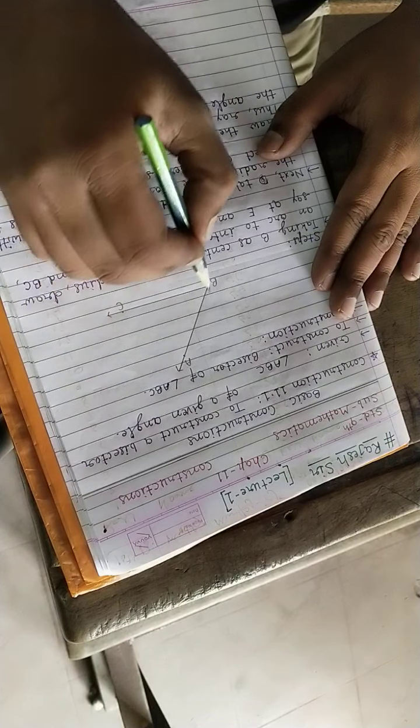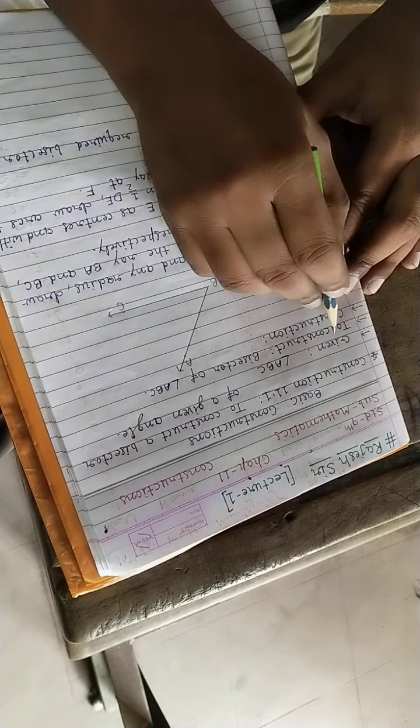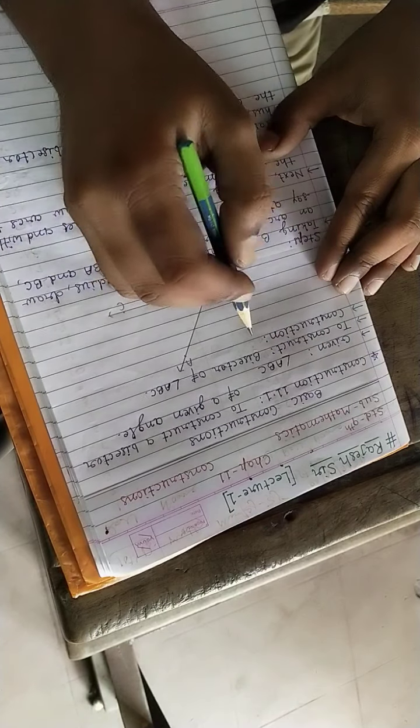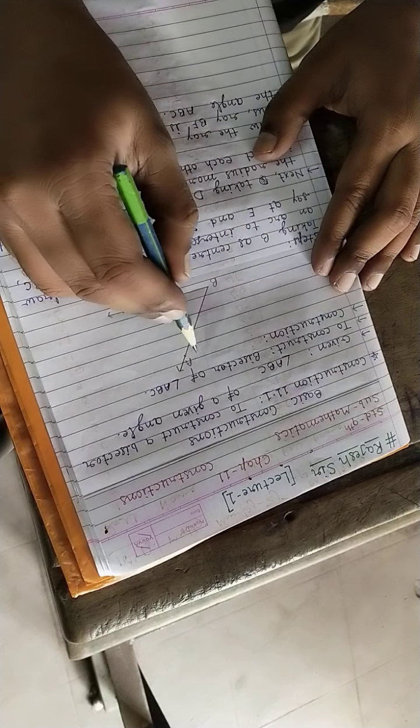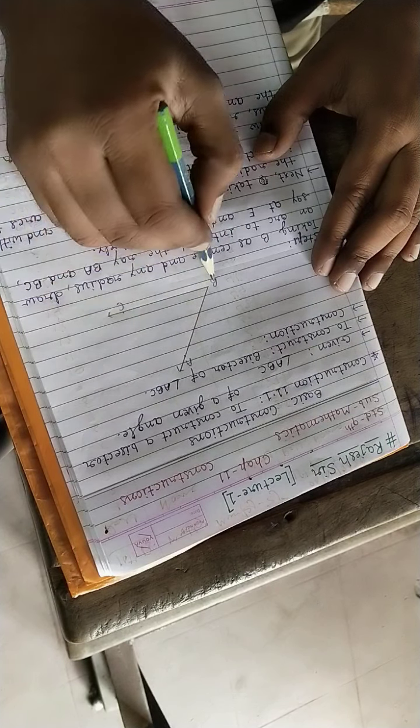Let the given angle be ABC. The given angle is ABC, and what is our work here? What to construct? We have to construct the bisector of this angle ABC.